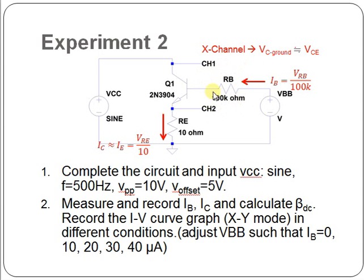Note that the RB is 100 kilo-ohm and you have to adjust the VBB such that the IB equals to 0, 10, 20, 30, and 40 micro-ampere. Plot each IV curve graph of these conditions.